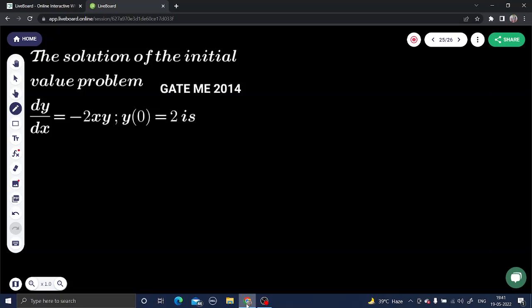Let's see a question from GATE Mechanical Engineering 2014. The question is from differential equations: the solution of the initial value problem. That means the initial value problem - basically general solution, particular solution. The question is dy/dx equals minus 2xy and constant value, initial conditions given.